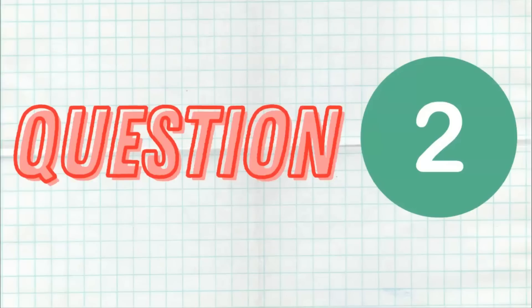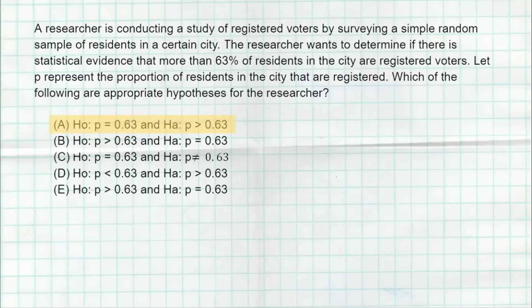Question number two. The correct answer is A. We're clearly dealing with proportions — looking at the proportion of people who are registered voters. We have the belief that it's 63%, so that's our null hypothesis. The alternative is what we're looking for evidence for, and that's more than 63%, so the alternative is that the population proportion is greater than 0.63. Notice that in choices B, D, and E, we don't have equal signs. The null hypothesis should always have an equal sign for AP Statistics, while the alternative can be greater than, less than, or not equal to.